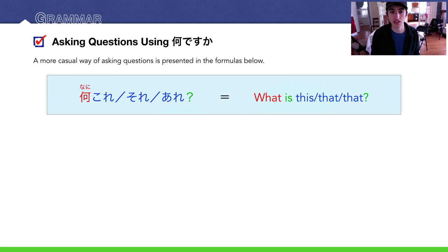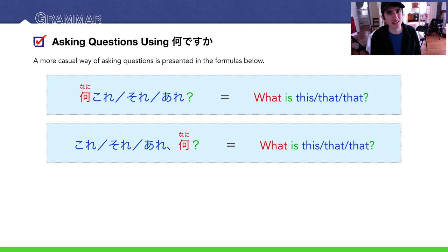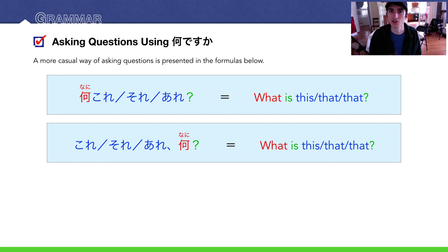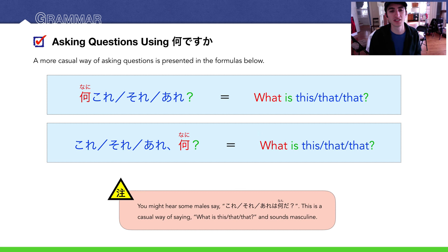There are casual ways of asking questions like this. You can say なにこれ？、なにそれ？、なにあれ？ — with no か, so you need a question mark and a questioning tone. Another way is これなに？、それなに？、あれなに？ This sounds a bit childish or feminine. Most males will say これなんだ？、それなんだ？、あれなんだ？ — a more masculine tone. Generally, when you add だ to anything, it becomes more masculine.